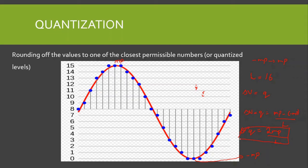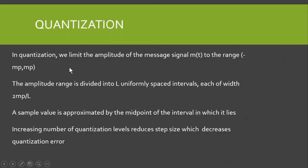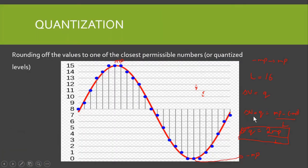So delta_v = q = 2mp / L. Remember this equation: each step size is 2mp divided by L. In quantization, we limit the amplitude of the message signal to the range minus mp to mp. The amplitude range is divided into L uniformly spaced intervals, each of width 2mp / L.